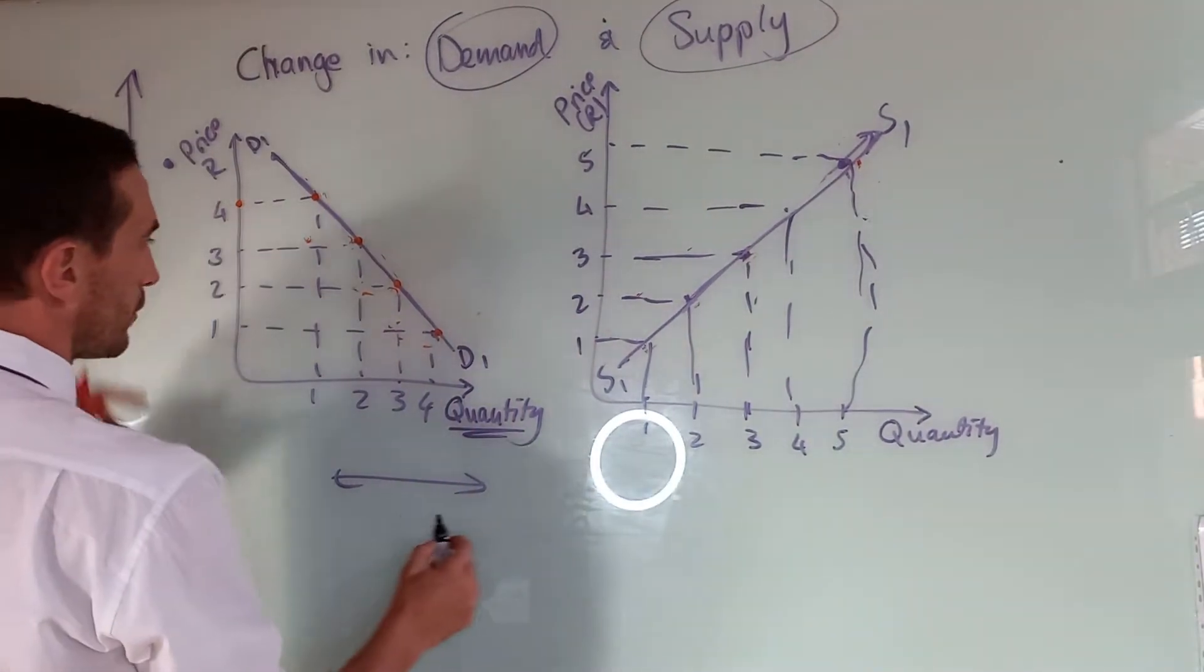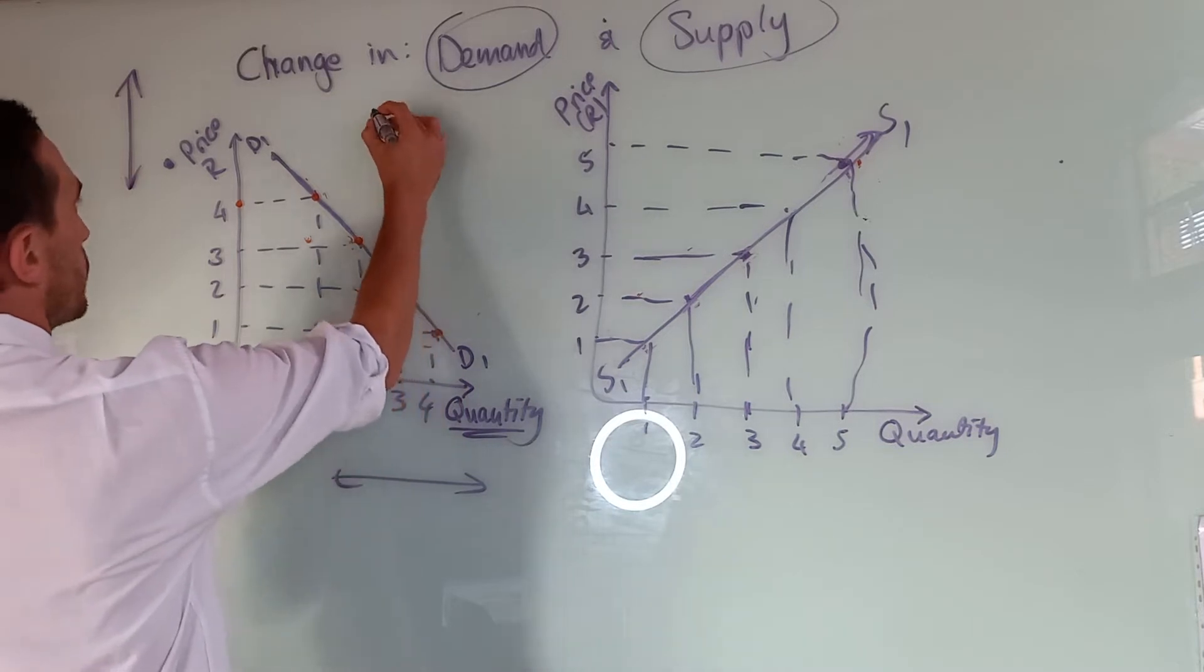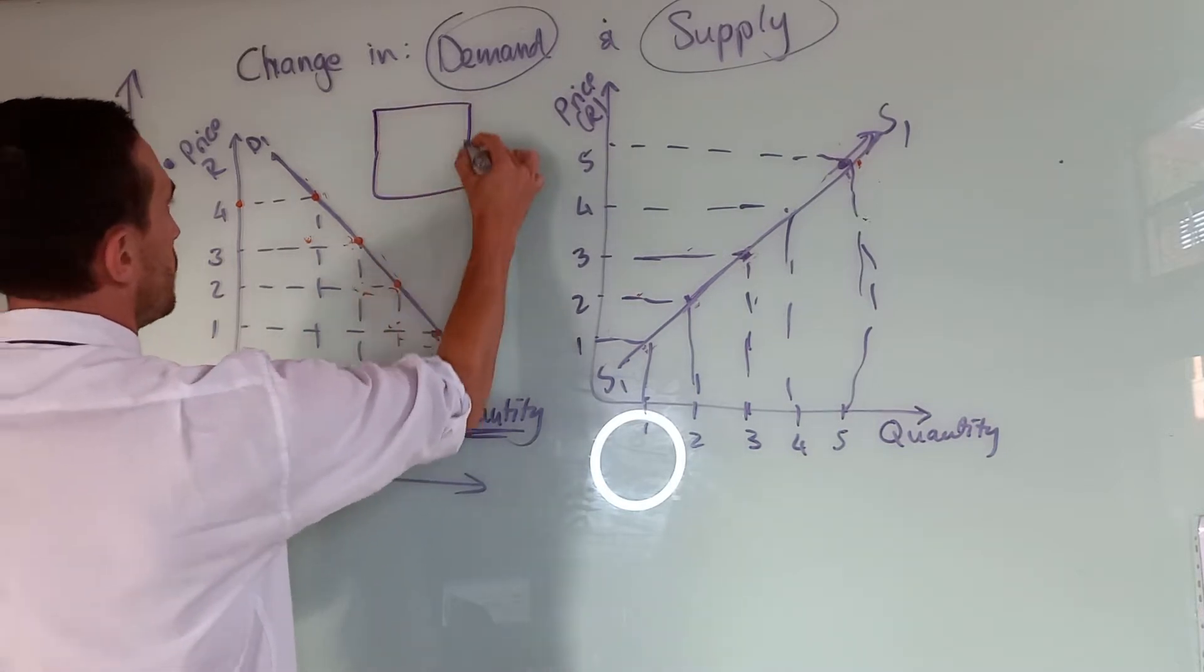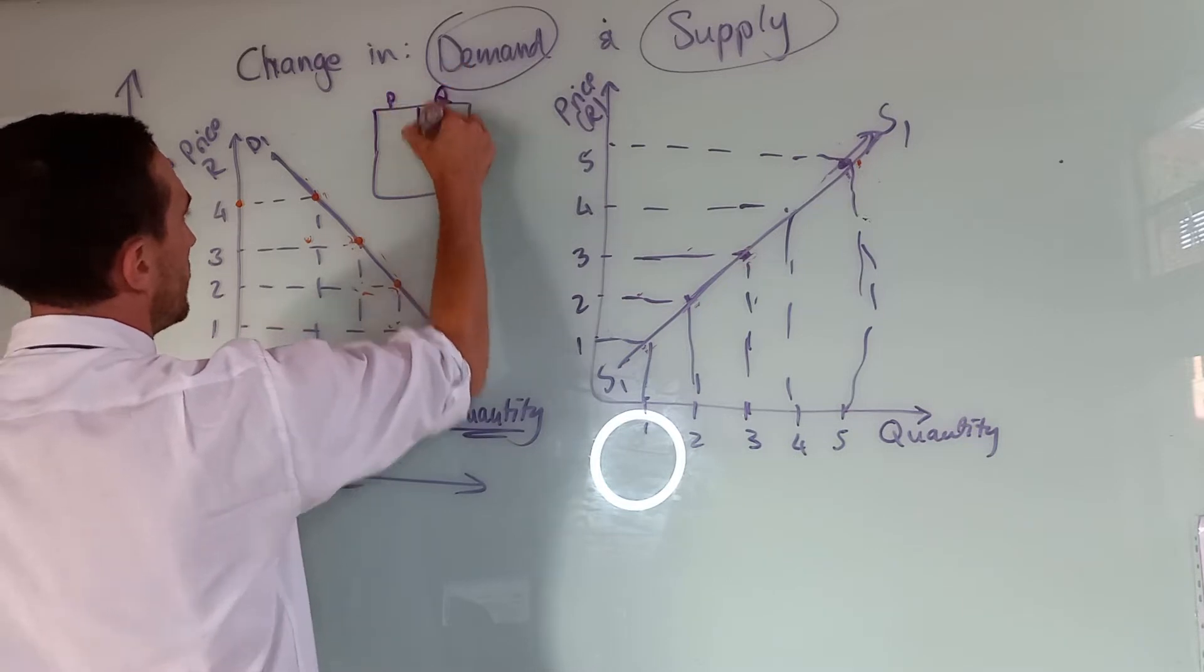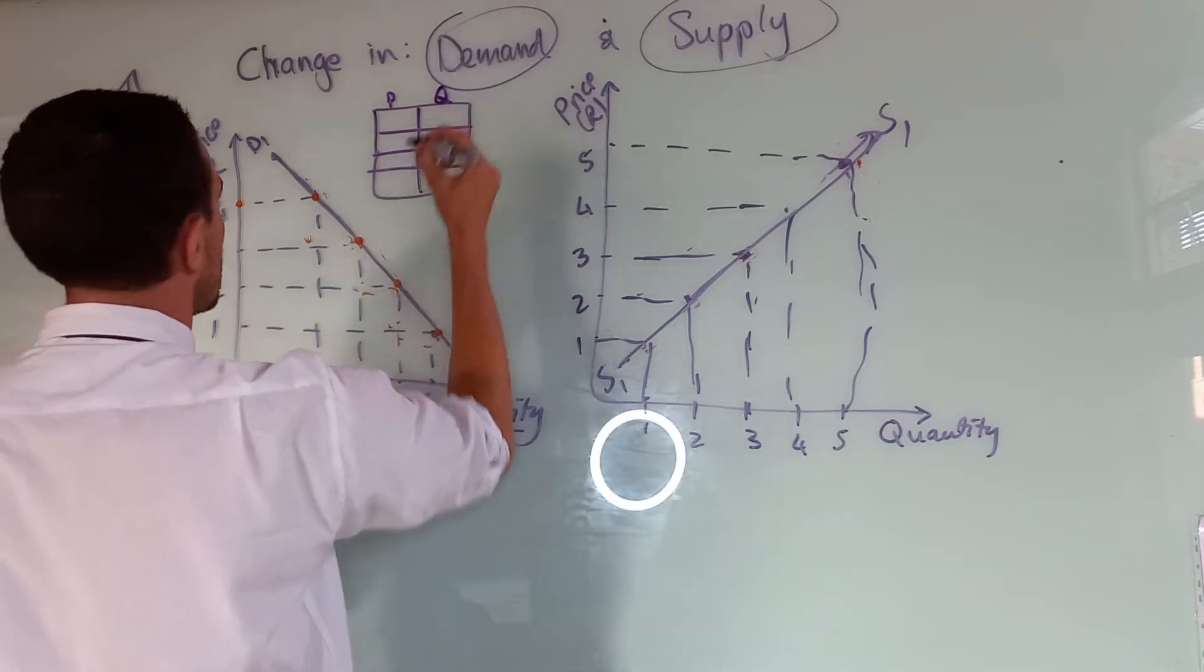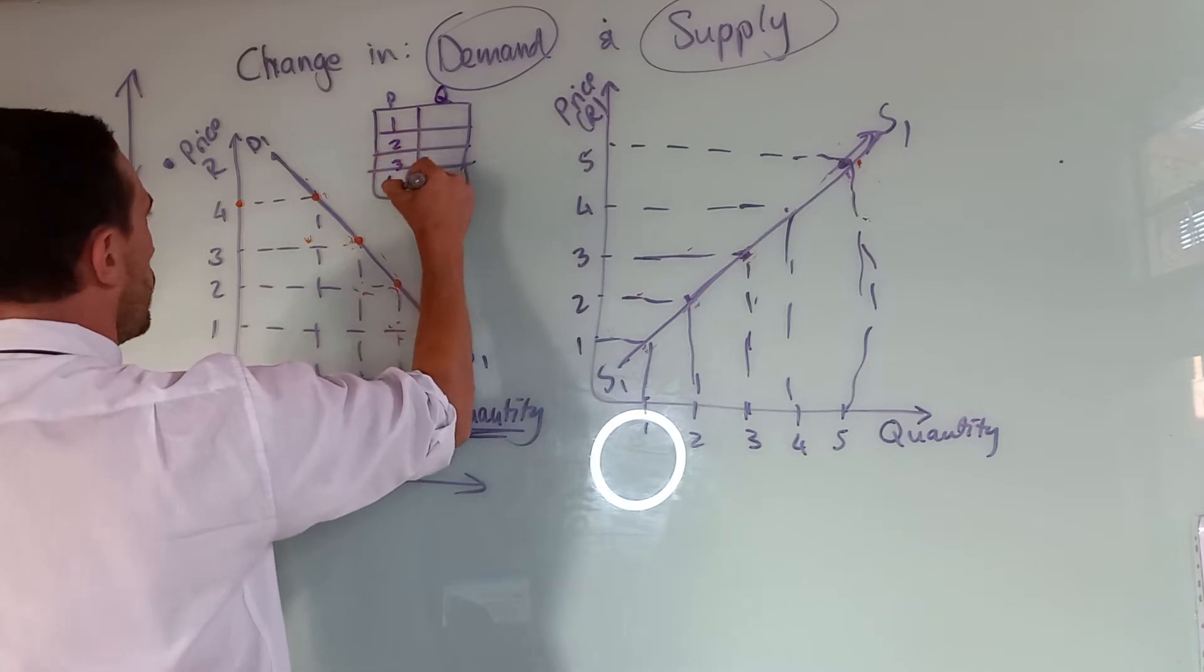For example, this table would look something like this. If you have price here and quantity here, let's quickly recreate this table. At one, two, three, four.